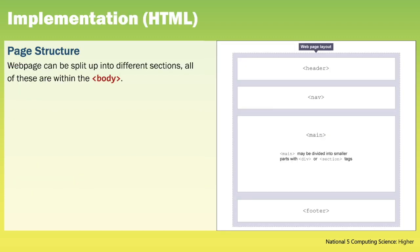Once we've designed our web page we can then move on to implementing it using HTML. A web page can be split up into different sections, all of which are within the body of the page. The header element will show the website banner, which will often include a title and an image. The nav element will contain the navigational links within our website, and the main element will contain the page content.